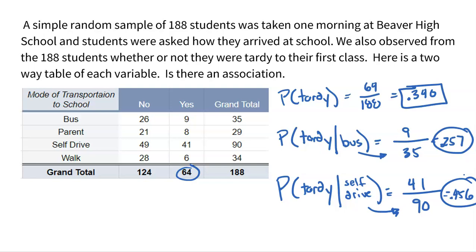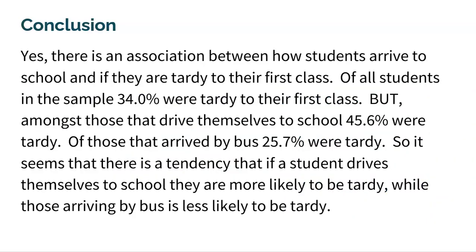Is there an association between being tardy and how you get to school? What I have in front of me is enough to answer the question. Here's a really great answer: 'Yes, there is an association between how students arrive to school and if they are tardy to the first class. Of all students in the sample, 34% were tardy. But amongst those that drive themselves, 45.6% were tardy. Of those that arrive by bus, 25.7% were tardy. So there is a tendency that students who drive themselves are more likely to be tardy, while those that arrive by bus are less likely to be tardy.' There is clearly a relationship — an association, a connection.